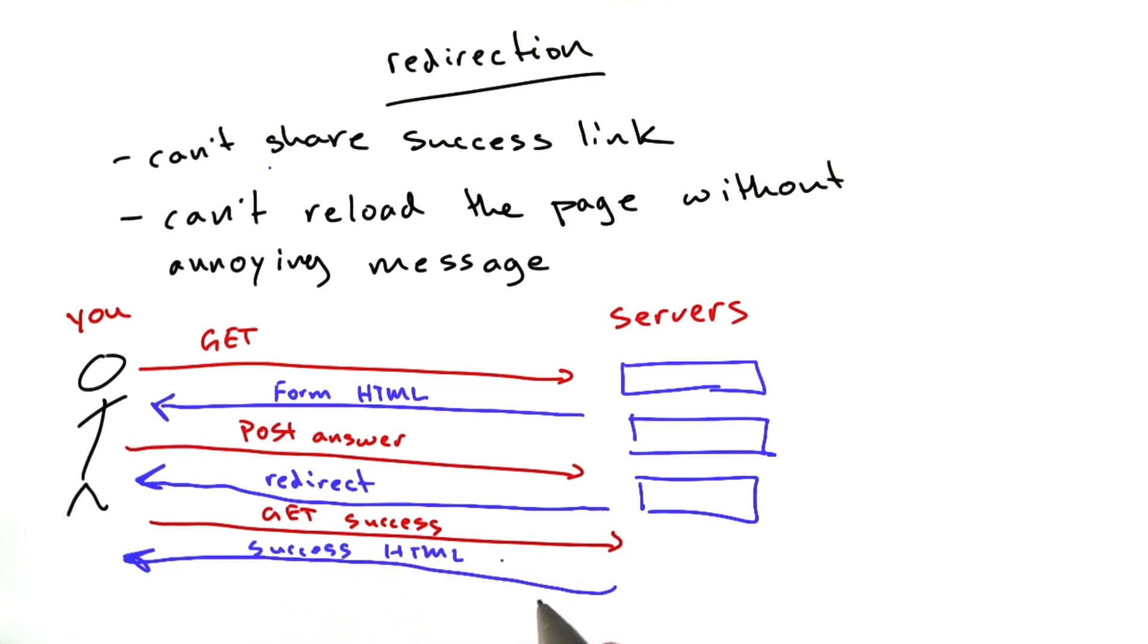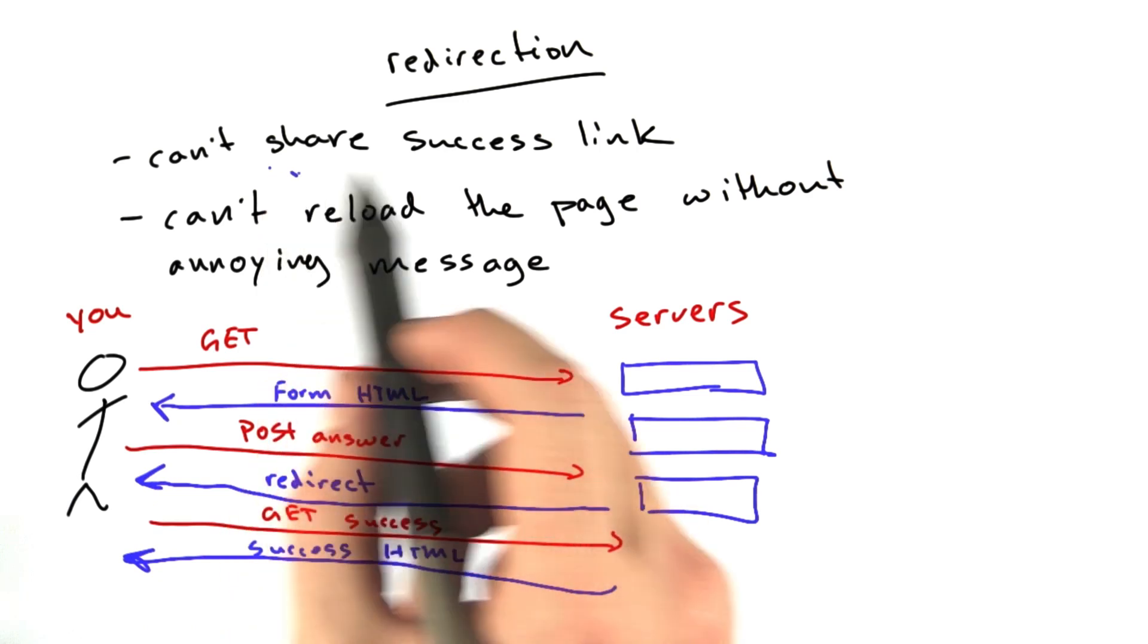Now, you may think the old way had only two round trips: get, post, answer. And the new way has a get, a post, and get the success page. So that's three round trips. But we can avoid both of these issues.